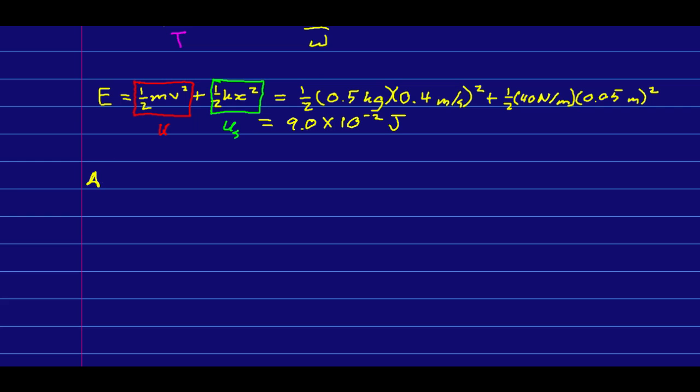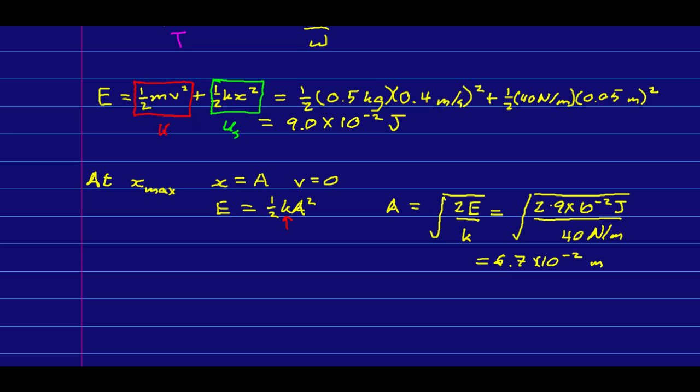Notice that when the oscillator is at its maximum displacement from equilibrium, then by definition x is A. At that moment, its speed has to be zero. So we can use that to say the energy equals, at that moment, zero kinetic energy and the potential energy is just half k A squared. There's our direct relationship between A and E. This is specific to a mass on a spring. We can now solve for A. The amplitude is 6.7 times 10 to the negative 2, or about 6.7 centimeters.